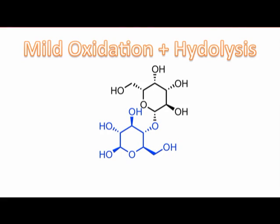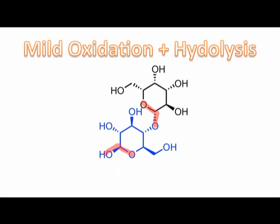In our discussion of methods for elucidating the structure of disaccharides, we saw that hemiacetals could be distinguished from acetals within disaccharides by a mild oxidation with aqueous bromine. The key idea was that hemiacetals are able to open to form aldehydes, while acetals are not.